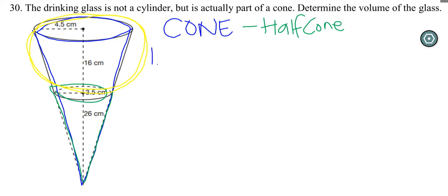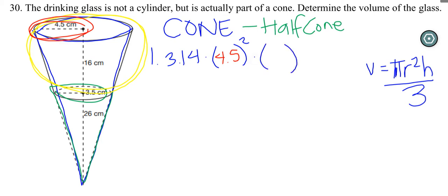Step one, we're going to start with the cone. And we know the cone formula is volume equals pi r squared times the height divided by 3. So we have 3.14 times the radius squared, and the radius on here is right there, 4.5 centimeters. So 4.5, and then we're going to times by the height, which is all the way down to the point. And so that's 26 plus 16, 42 centimeters. And then that whole thing will be divided by 3.